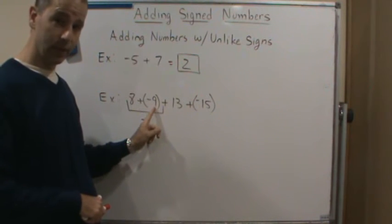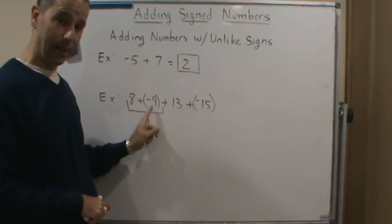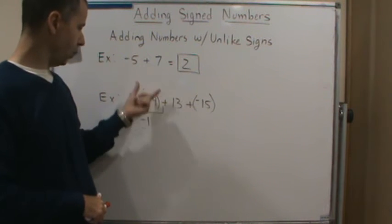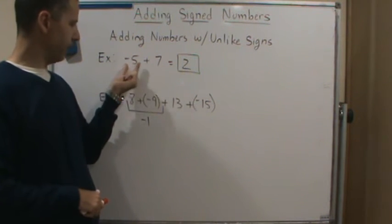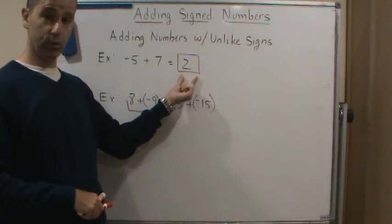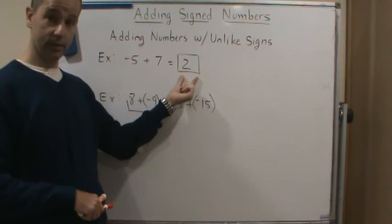So in this case here, 7 is bigger than 5. So 7 controls the sign of the sum, right?